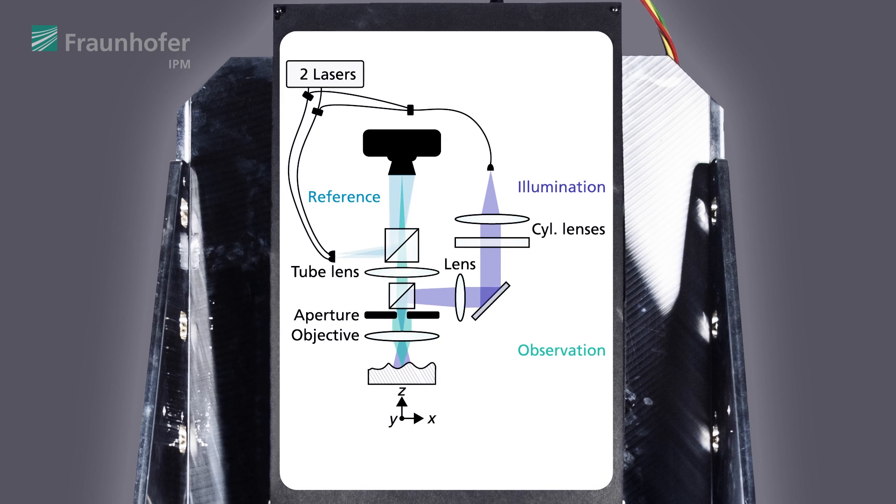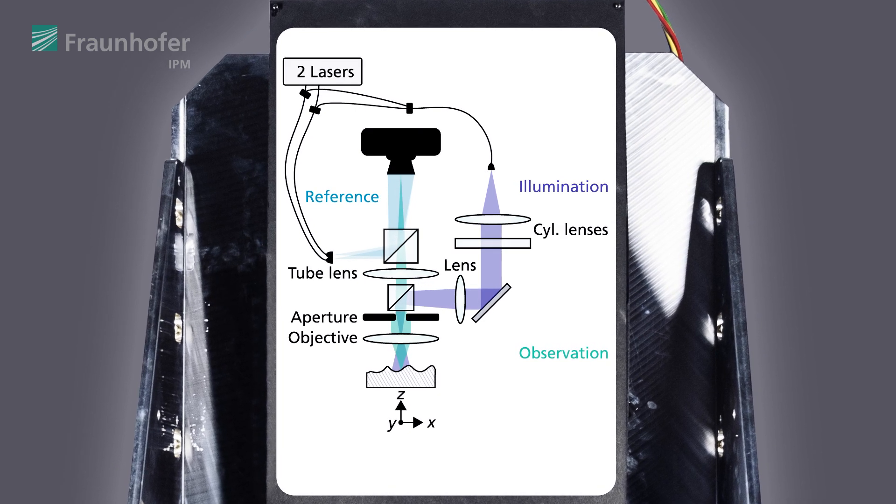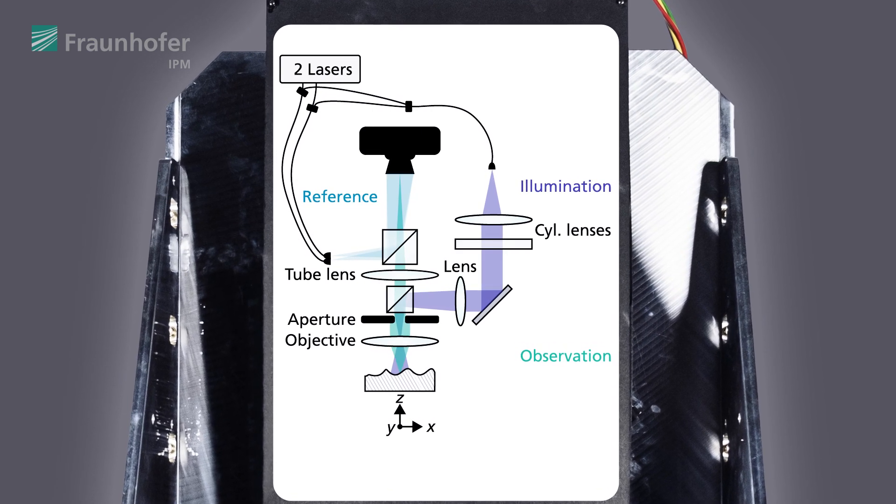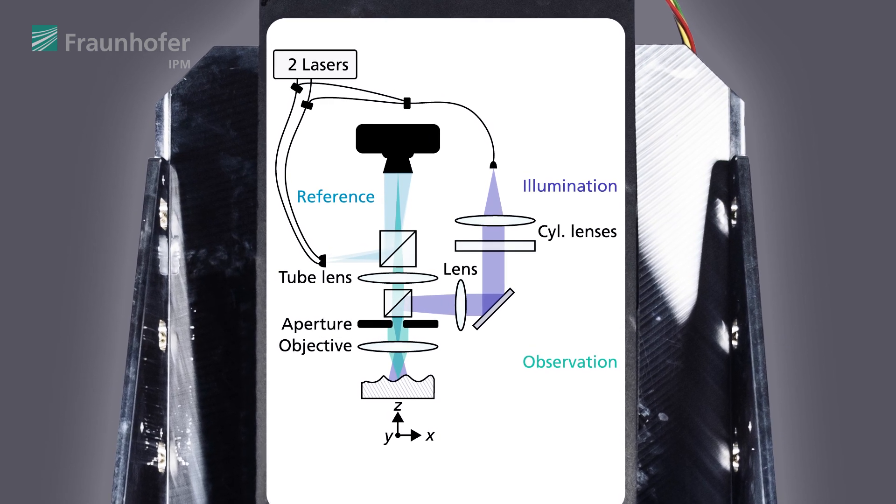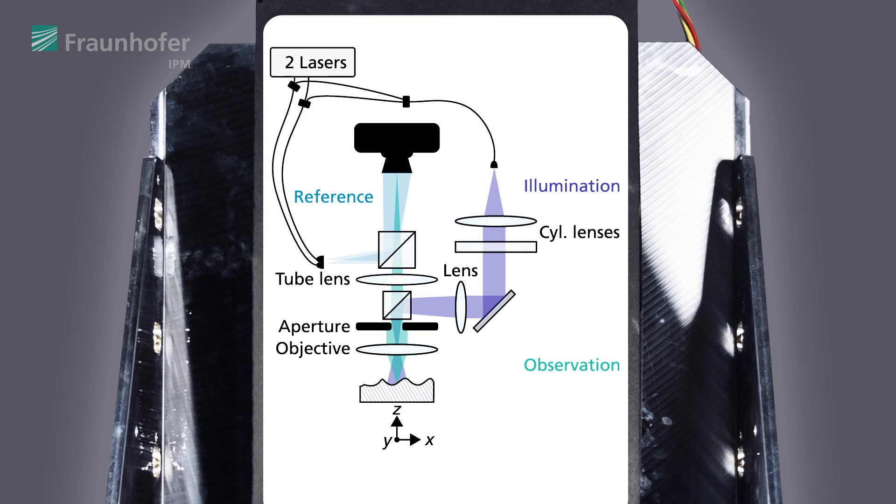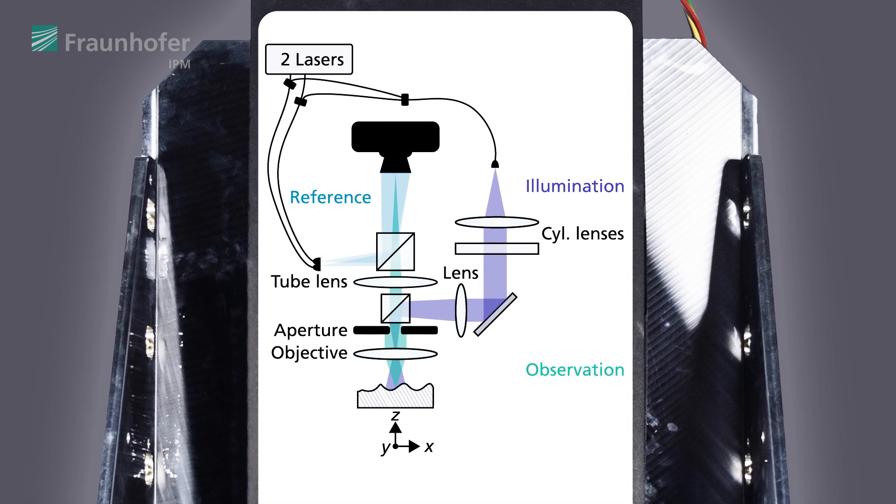The reference light is coupled into the reference arm by a beam splitter and is tilted to the optical axis with different angles per wavelength. This modulates the interferogram with a carrier fringe pattern and because the angles are different, the spatial carrier frequency is different for each wavelength.